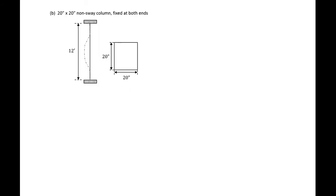Next we'll look at a 20 inch by 20 inch non-sway column that's fixed at both ends. A non-sway column fixed at both ends gives us an effective length factor k of 0.5.